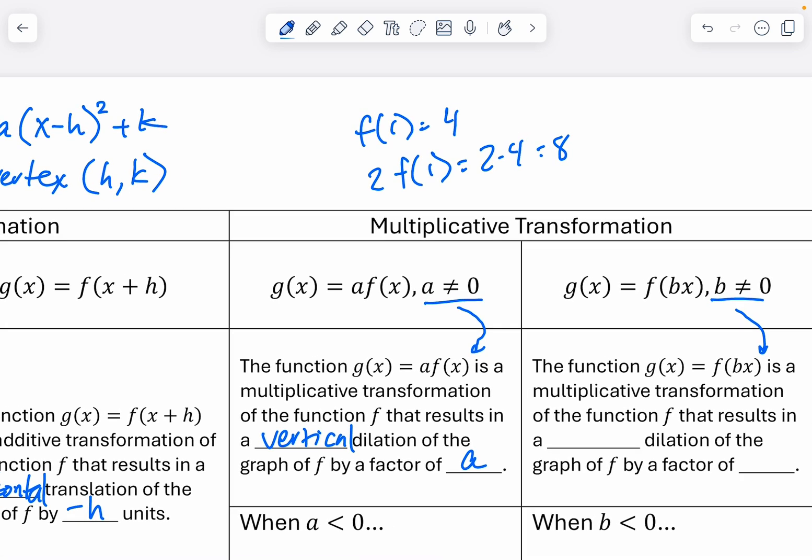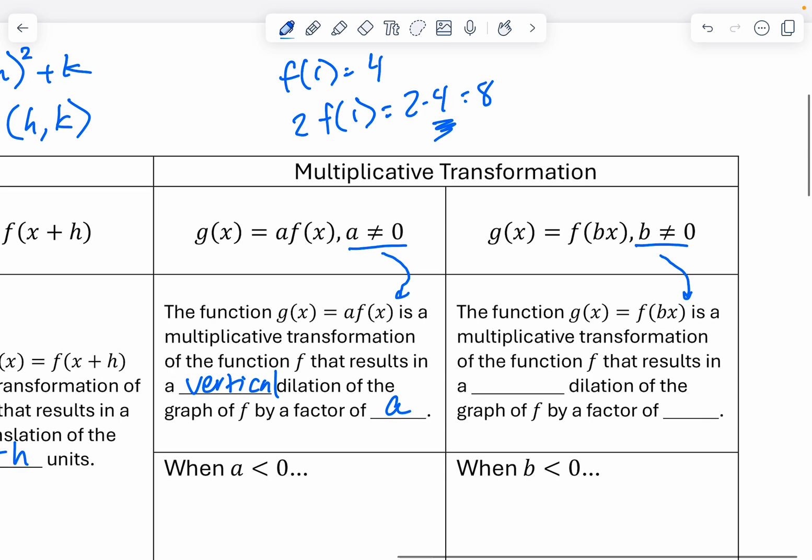So notice what I did is I multiplied my y value by 2. Coming over here, if I have f of bx, then the function g(x) equals f(bx) is a multiplicative transformation of the function f that results in a horizontal dilation of the graph by a factor of, oh, you know what, I messed up, I forgot, this is the absolute value of 1 over b. And this is the absolute value of a. So if this had been back over here, if I'd had a negative 2, this is now, the point has now become negative 8, or the y value is now negative 8, but it was still a vertical dilation by 2.